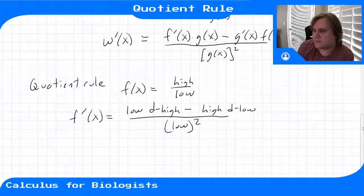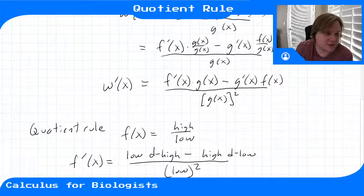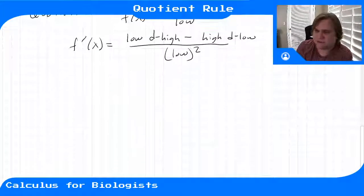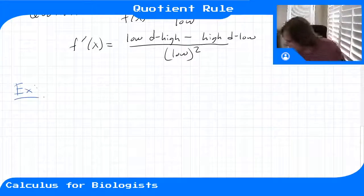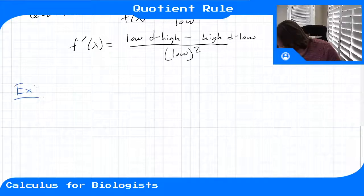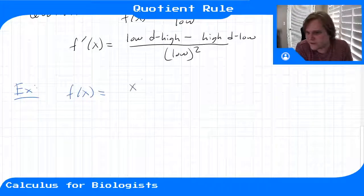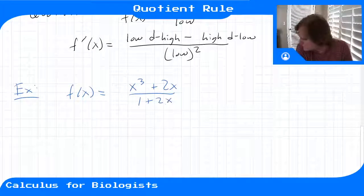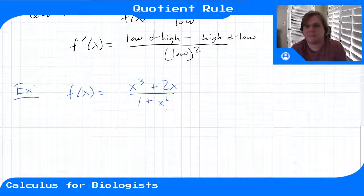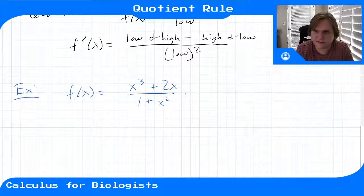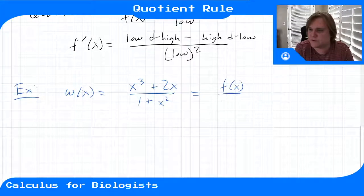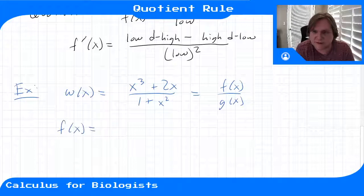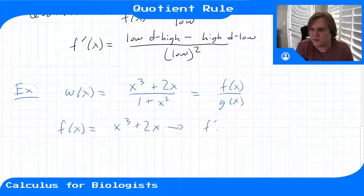That whole thing goes over low squared. So the formula is f prime g minus g prime f over g of x squared. Let's do an example. Say we have w of x equal to x cubed plus two x over one plus x squared, which we can write as f of x over g of x, where f is x cubed plus two x and g is one plus x squared.